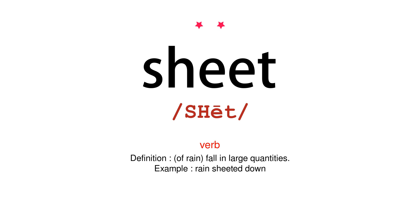Verb. Definition: of rain, fall in large quantities. Example: rain sheeted down.